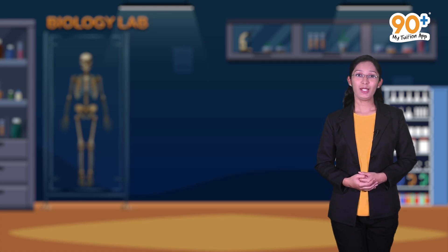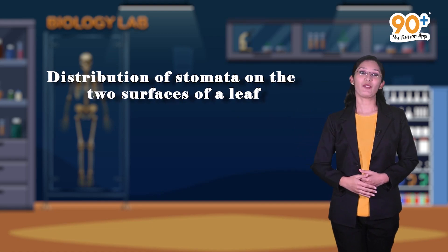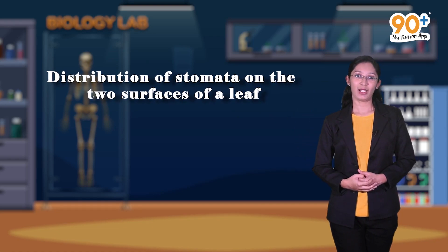Hello friends, welcome to 90 Plus Virtual Lab. We all know that lab activities help us in the easy understanding of biological concepts. Today let's start with our new experiment: distribution of stomata on the two surfaces of a leaf.